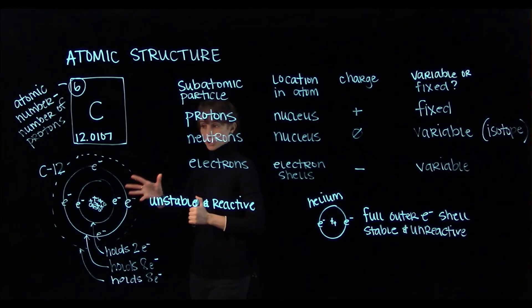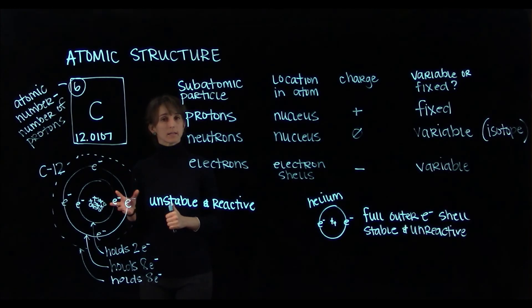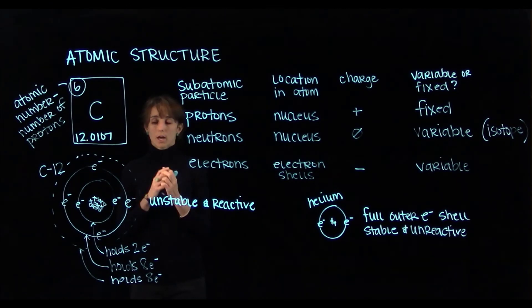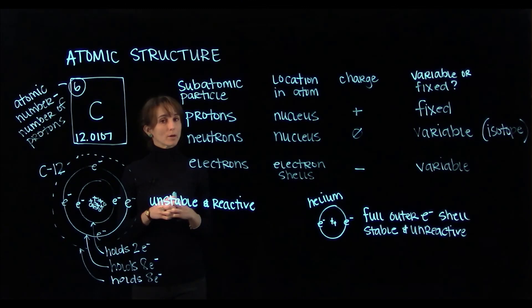Any atom, such as carbon, that has vacancies in its outer shell, really wants those vacancies to be filled. So the way that that happens is through chemical bonds, and we'll talk about chemical bonds next.